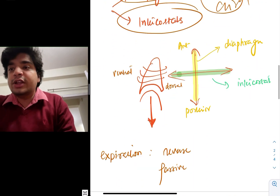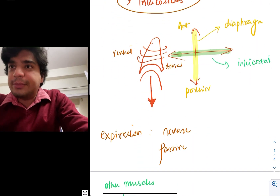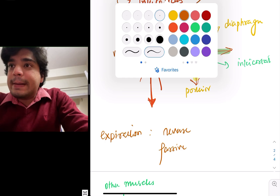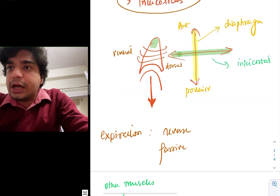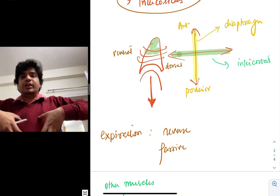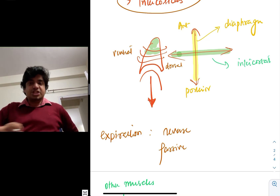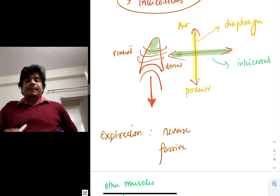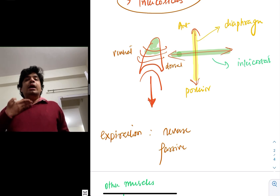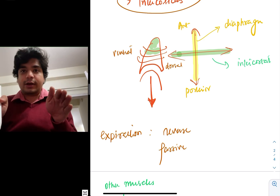So how does this happen? Suppose this is a lung — let's assume this part is the lung. We are surrounded by ribs, and just separating our abdomen and our thoracic cavity is the diaphragm.